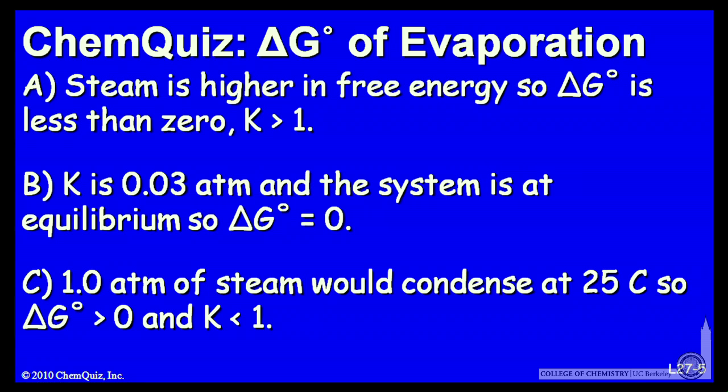Or C, one atmosphere of steam would condense at 25 degrees C, so ΔG° is bigger than zero and K is less than 1. Think about those and make a selection.